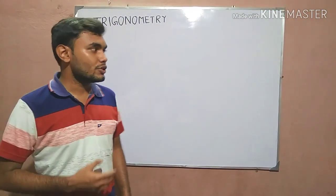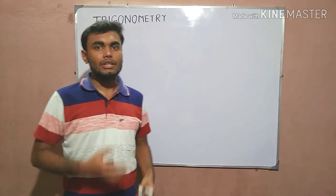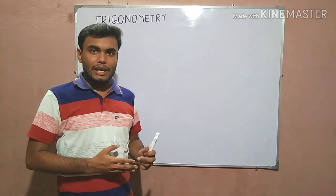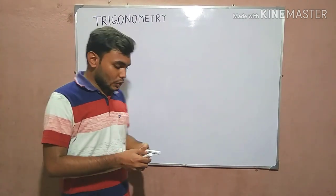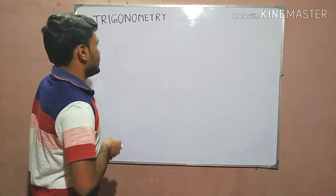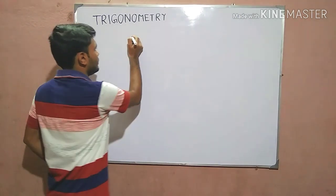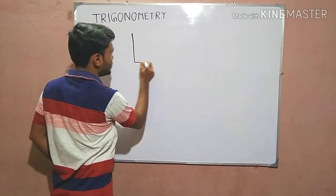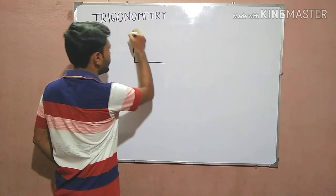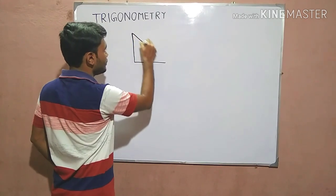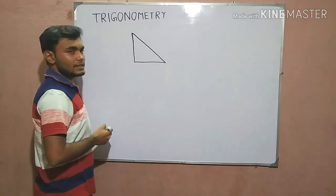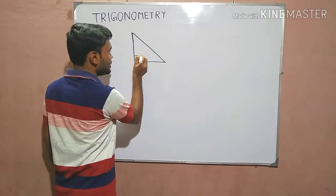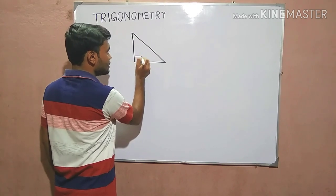Before going to that chapter, we need to draw a right angle triangle including an angle of 45 degree. First of all, this is a right angle triangle where this angle is 90 degree.